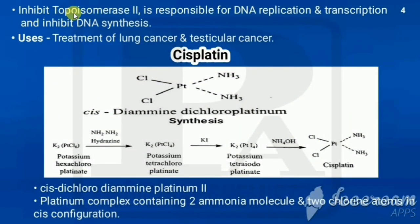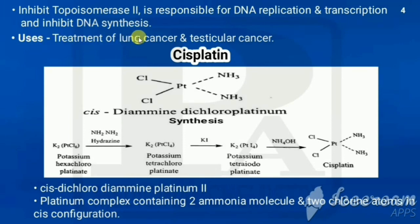Epipodophyllotoxins inhibit topoisomerase 2, the enzyme responsible for DNA replication and transcription. By inhibiting this enzyme, DNA synthesis is inhibited. They are used in the treatment of lung cancer and testicular cancer.